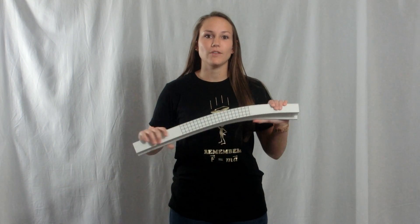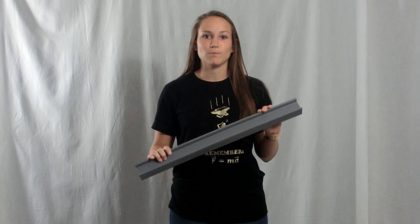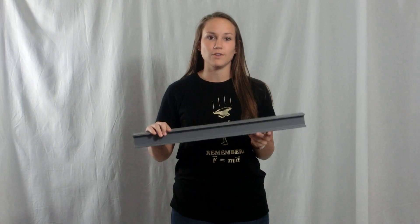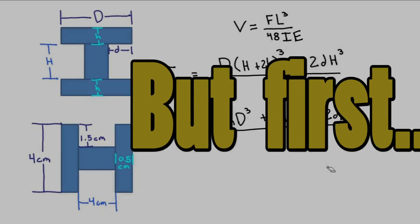In this video we will be analyzing deflection of I-beams. Here we have two I-beams. With this white I-beam we will show how there is both compression and tension present during deflection. On the gray I-beam we will show how the deflection changes depending on the orientation of the I-beam. But first let's look at the math behind these beams.